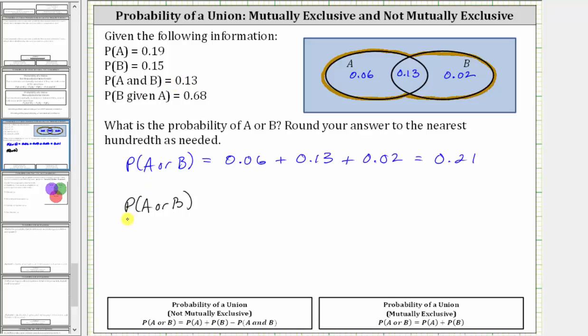And therefore, to find the probability of A or B, we use the formula here for events that are not mutually exclusive, which is equal to the probability of A plus the probability of B minus the probability of A and B.